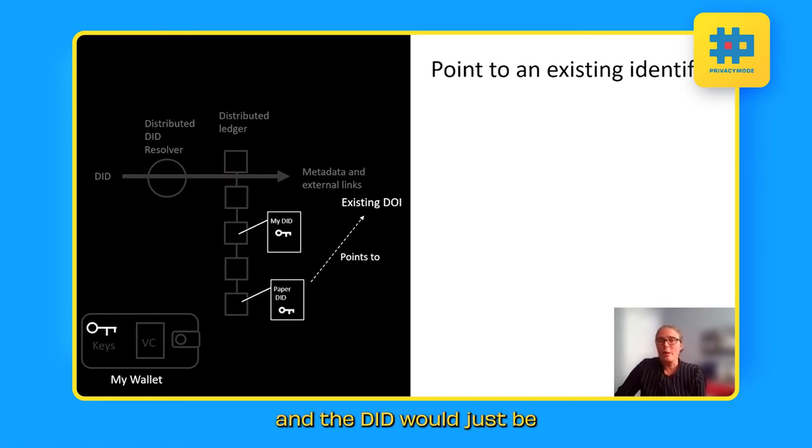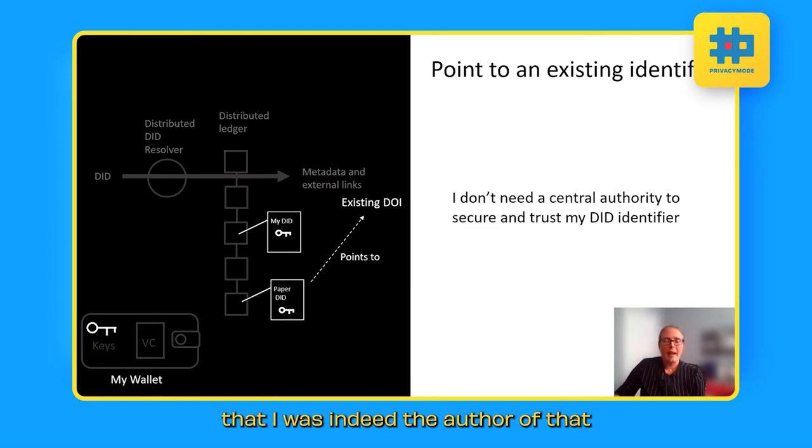Now, the next thing that I would do is I would create the DID for my paper that's already existing and the DID would just be a reference downstream to the existing DOI or URL. And I would sign that DID with my private key so somebody else then would be able to go and look up that they can confirm using looking at my public key that I was indeed the author of that paper DID. And the important thing here is that I didn't need a central authority in order to secure and trust my decentralized identifier.